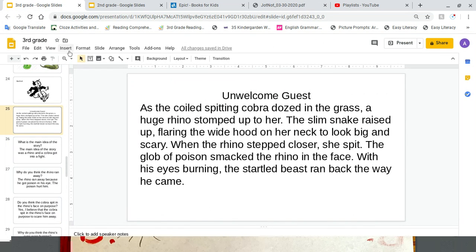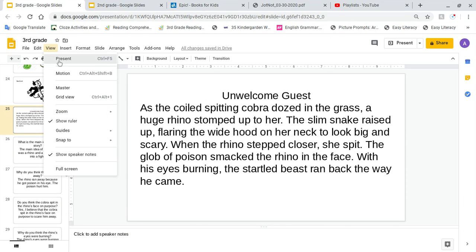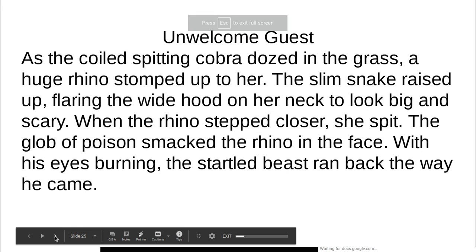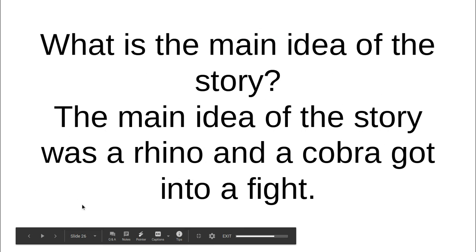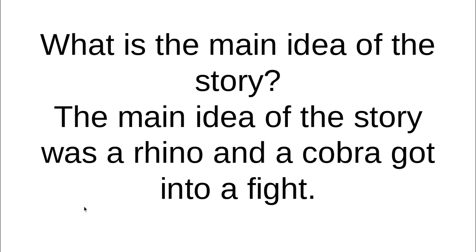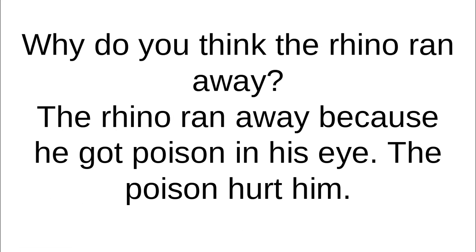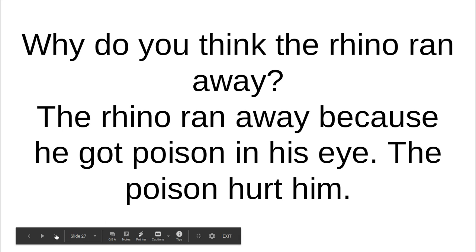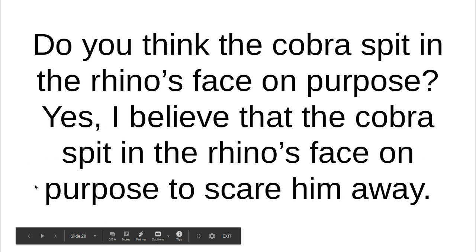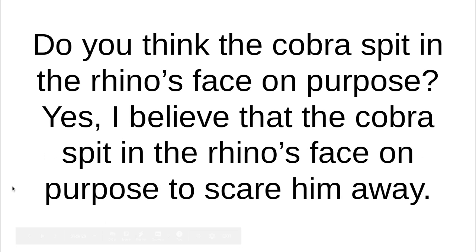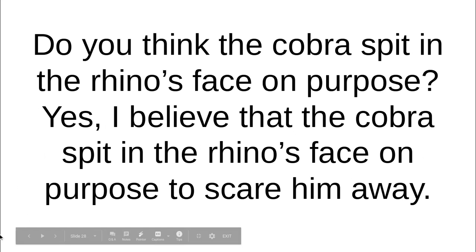Going back to the slides, I wanted to share the answers to the questions. What's the main idea of the story? A rhino and a cobra got into a fight. Why do you think the rhino ran away? The rhino ran away because he got poison in his eye and the poison hurt him. Do you think the cobra spit in the rhino's face on purpose? Yes — I believe the cobra spit in the rhino's face on purpose to scare him away.